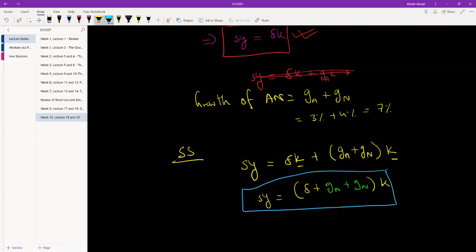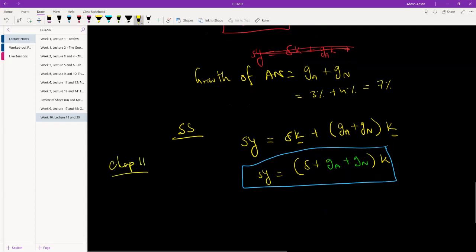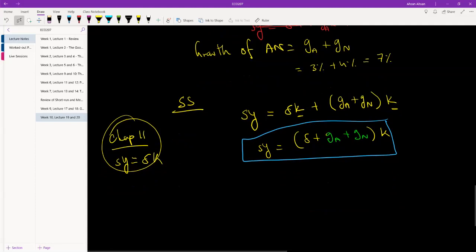In the previous chapter, let me write this down here, in chapter 11 steady state requirement was sy equals to delta k. In this chapter we've added the growth rate of technology and population, so this is what we get.